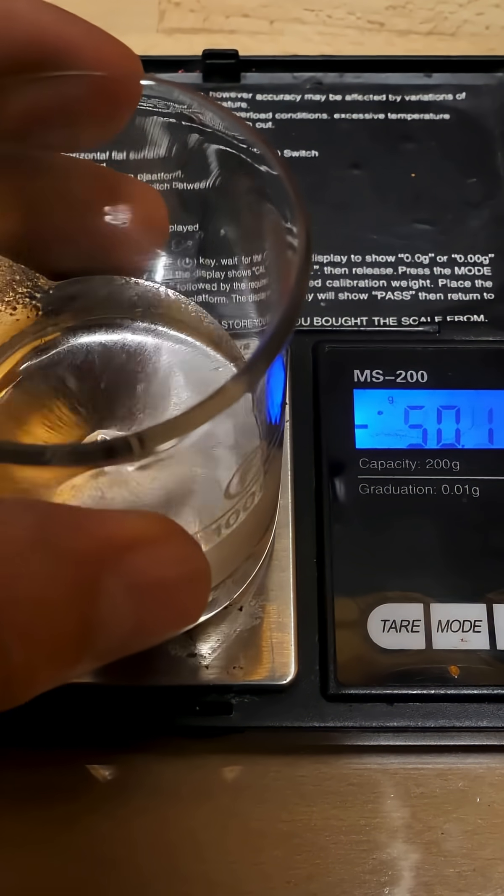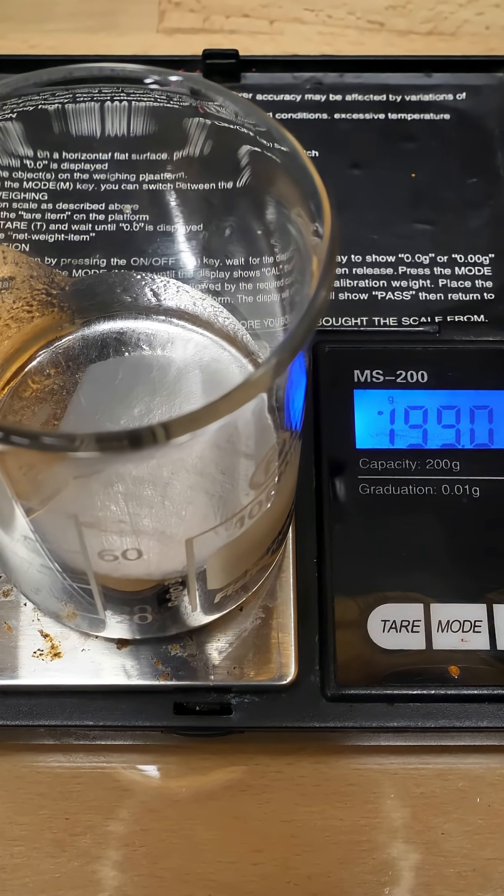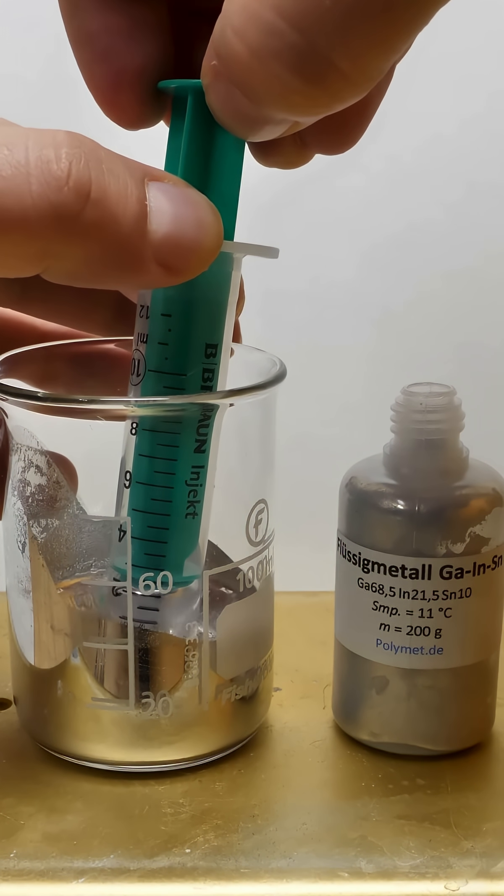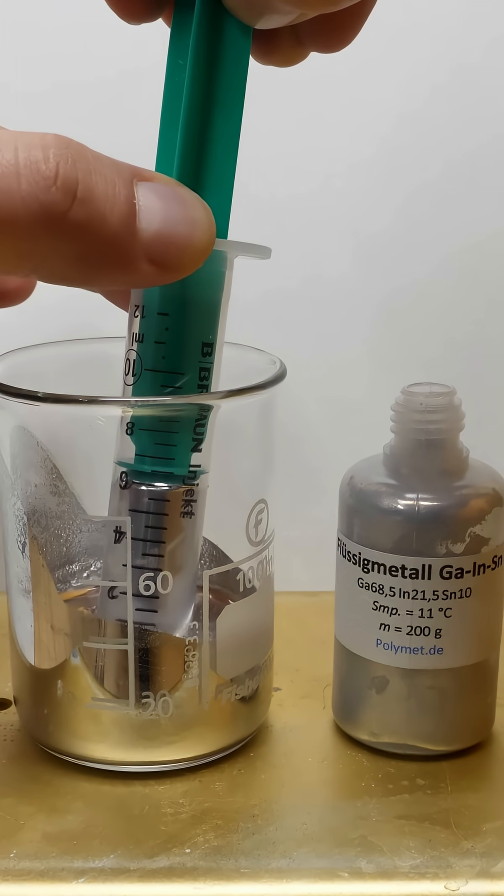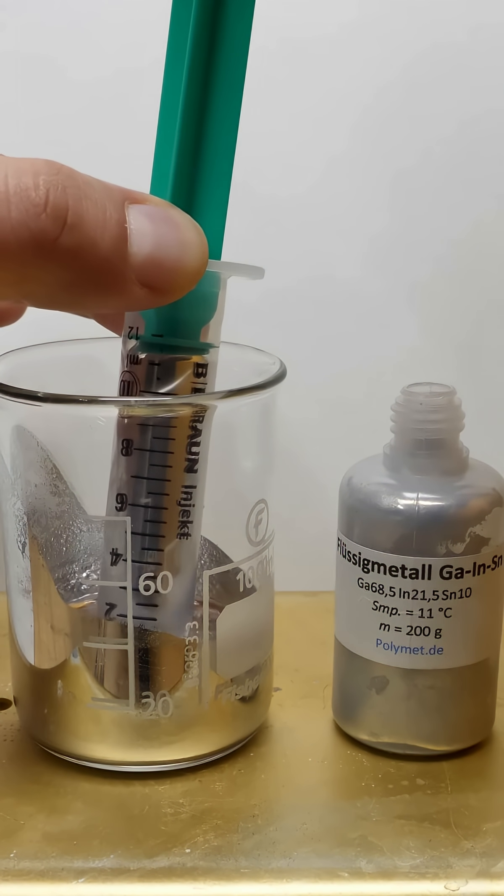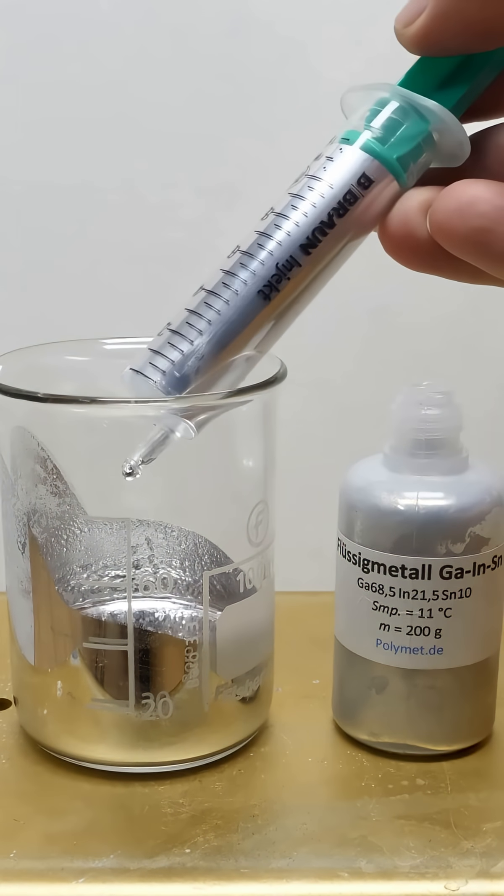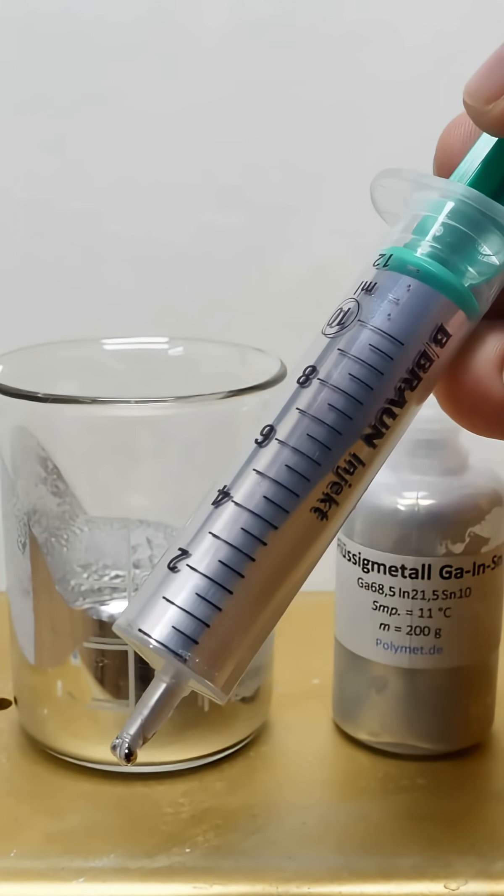Galinstan has a melting point of 11 degrees Celsius. However, I could put the liquid Galinstan in the fridge without it solidifying. That's the phenomenon of supercooled liquid. It becomes liquid at 11 degrees Celsius, but it doesn't solidify again until minus 19 degrees Celsius.